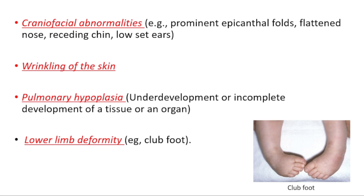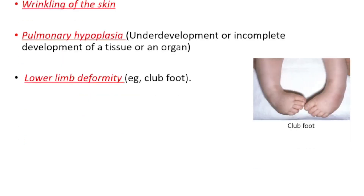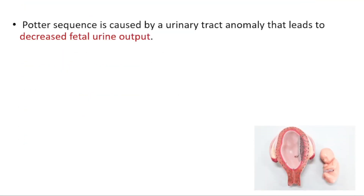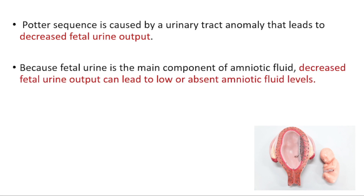You can also see lower limb deformity, for example club foot — you can find a picture of it on the right side of the screen. This is caused by a urinary tract anomaly that leads to decreased fetal urine output.